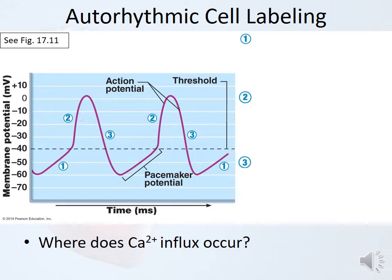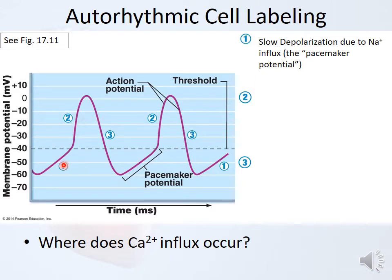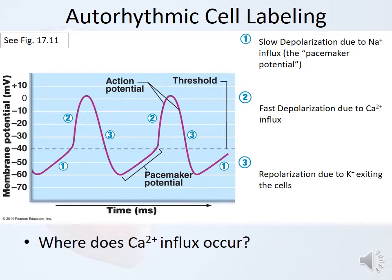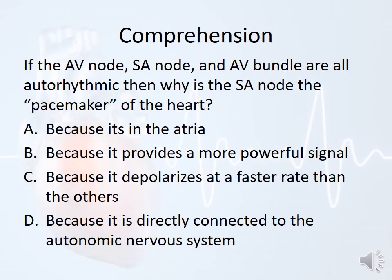The pacemaker action potential: number one is slow depolarization caused by slow sodium influx. Number two is, once we hit the threshold, fast depolarization due to calcium influx. Number three is repolarization caused by potassium exiting the cells — just like any other cell. There's no real resting membrane potential afterwards: as soon as those potassium channels close, sodium channels open and we start getting the slow leakage of sodium again.